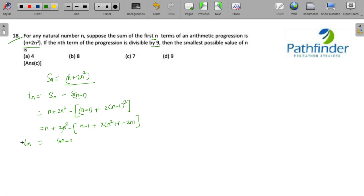So now if the nth term is 4n minus 1, we will take a look at the options. This is the smallest value of n. If n is equal to 4, T_n must be 15, which is not divisible by 9. If n is equal to 7, T_n is 27, which is divisible by 9. So the correct answer must be 7.